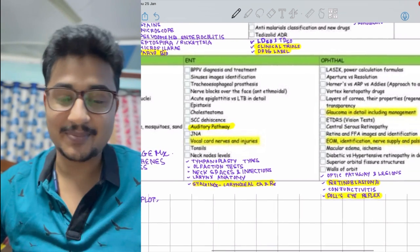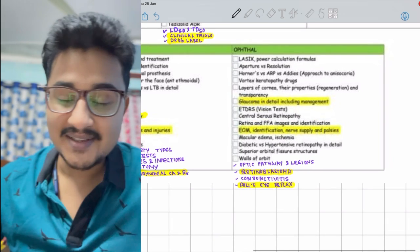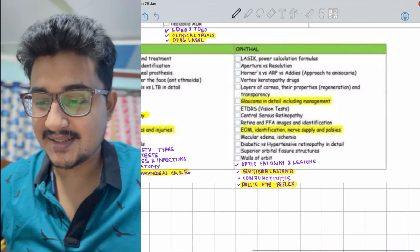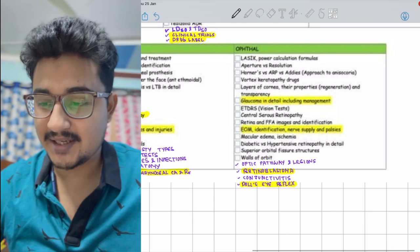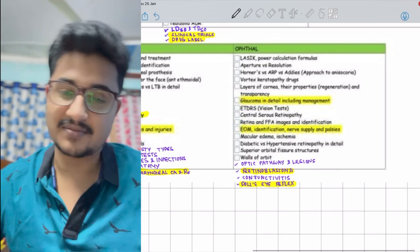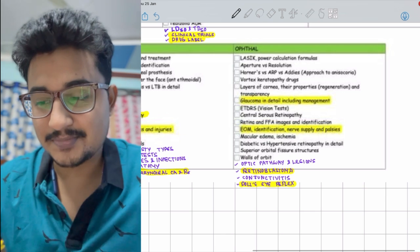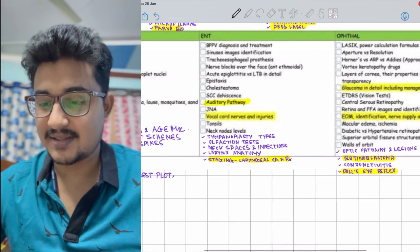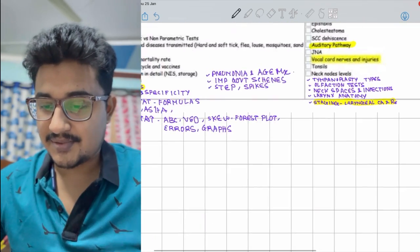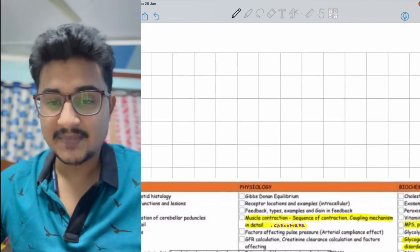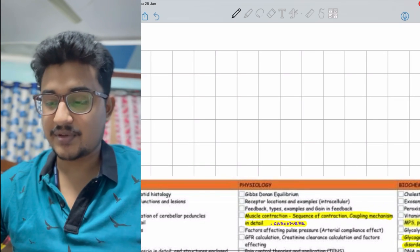In ophthalmology, mainly glaucoma is important, retinoblastoma - one tumor, retinoblastoma, very important for INICET perspective mainly. And doll's eye reflex are repeatedly asked nowadays in INICET. So I think this completes the discussion.